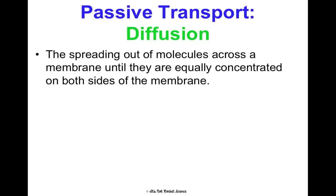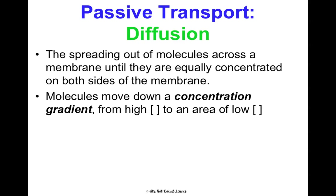Diffusion is the spreading out of molecules across the membrane until they're equally concentrated on both sides. Molecules move down a concentration gradient from high to low — going down the slide — and this requires no extra energy. Think of it like someone making bacon: the smell in the kitchen is super strong — high concentration — but in your room there's no smell, which is low concentration. Over time, the smell naturally diffuses through the house until it smells equally of bacon in every room.